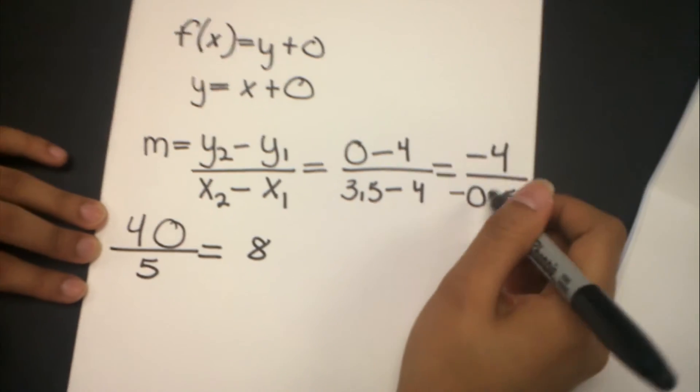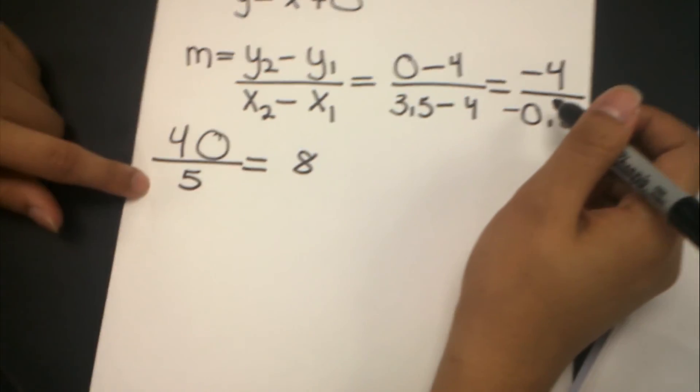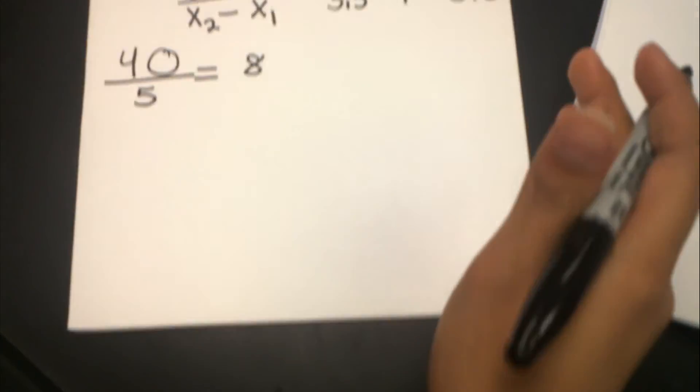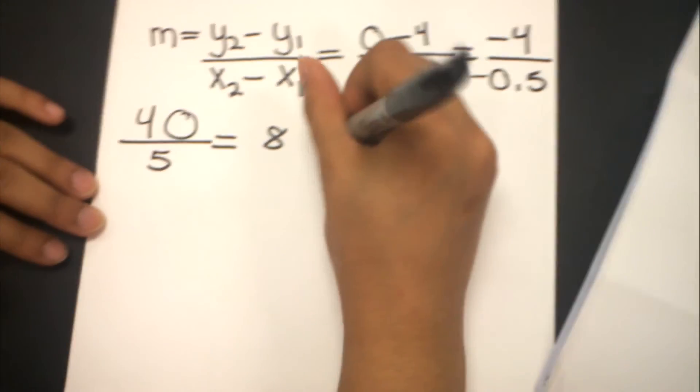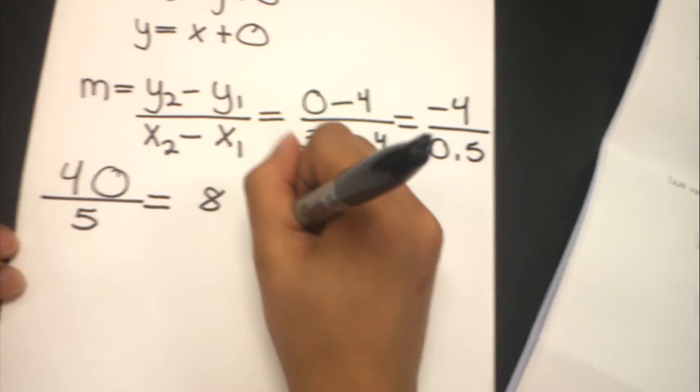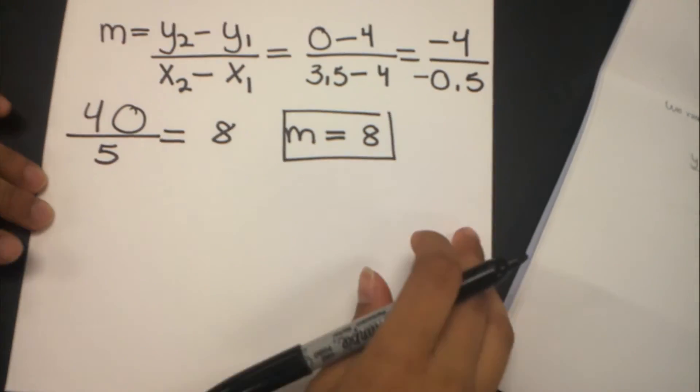40 divided by 5 is 8. This is supposed to be negative, but since they are both negative, we made them positive over here. Because you can't have both sides as negative, that would mean the answer would be positive 8. So the slope, which is M, is equal to 8, which is positive.